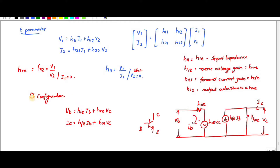For common emitter configuration, the input current is base and output current is collector. Input voltage is VB and output voltage is VC. So I can write: VB equals HIE·IB plus HRE·VC, and IC equals HFE·IB plus H0E·VC. This is your common emitter. Using these two equations, applying KCL, I can write IC equals HFE·IB and H0E·VC.